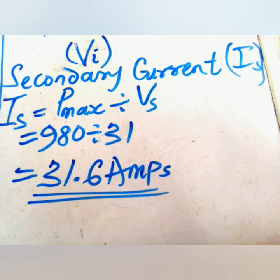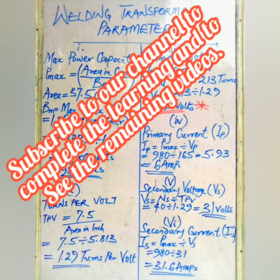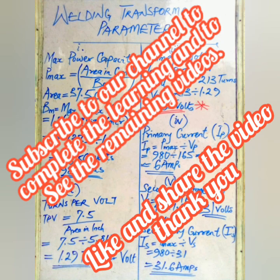Initially we knew nothing about this welding machine, but with the help of these simple calculations, we now know everything about it and have even identified the cause of its damage. This is the whole calculation and the different formulas used. Now we are going to build our own machine correctly. Watch our next video for more examples to better understand the calculations. Subscribe to the channel, like and share the video. Stay tuned.